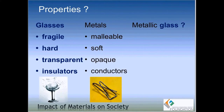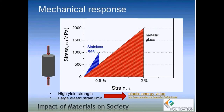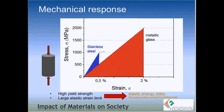Let's look at the mechanical response of a metallic glass. Comparing the stress versus strain curve of a metallic glass with a crystalline metal — stainless steel — you can see a strikingly different behavior. On the y-axis we have stress, which is load divided by the cross-sectional area, and on the x-axis we have strain, which is the change in length divided by the original length — essentially the amount of deformation the material undergoes.